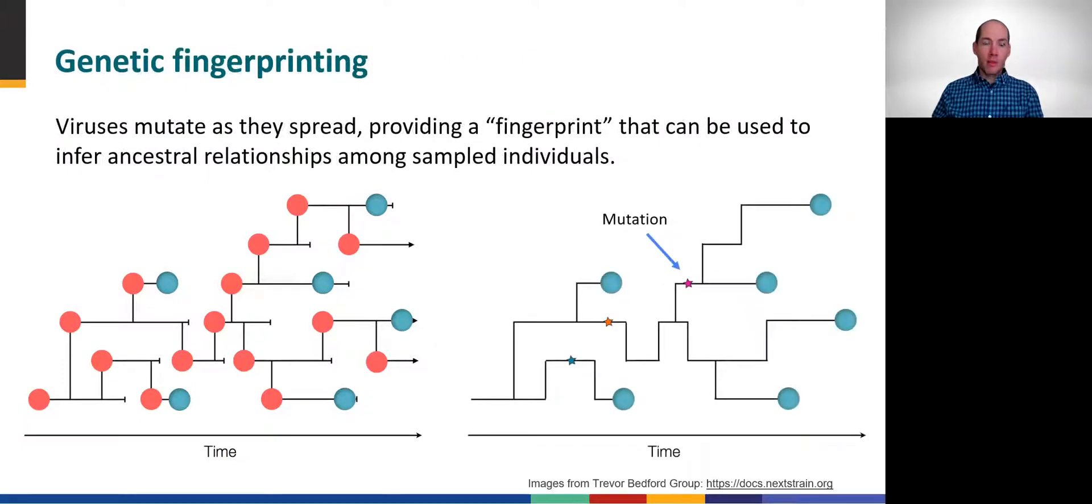Because viruses mutate as they spread, it's possible to use those mutations as molecular genetic fingerprints to infer ancestral relationships among the sampled individuals from the larger network.